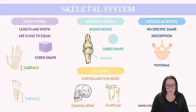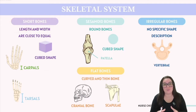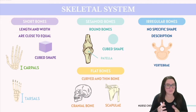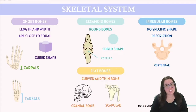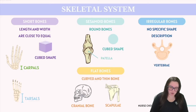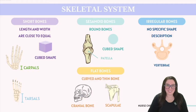Unlike long bones, short bones resemble cubes, where their length and their width are going to be roughly equivalent. These bones are mobilized through muscle contraction and provide significant stability. Examples include the carpals that we find in our wrists and the tarsals that are found in our ankles.